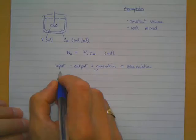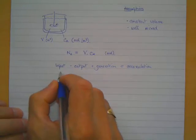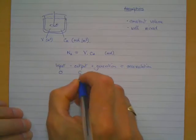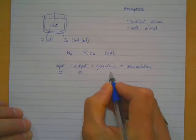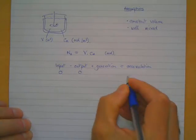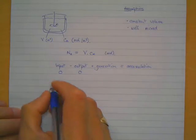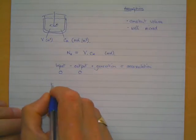Now in this case it's a batch reactor and we've already said from the time of interest, from time t equals zero, there are no further inputs, so that term is zero, that term is zero. So we're left with generation equals accumulation.